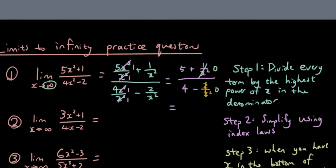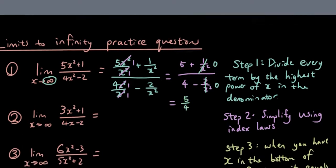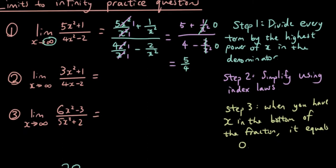So that turns into 0, that turns into 0, so the answer is 5 over 4. So that is the answer of that one. Hopefully that helps you a little bit. Follow these 3 steps and see if you can do the other 2 questions.